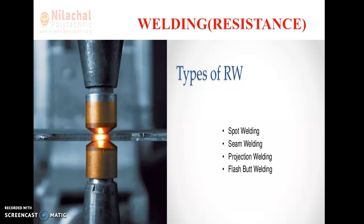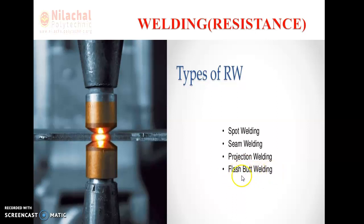Here we come to the different types of resistance welding process. You can see in this slide: there is spot welding, seam welding, projection welding, and flash welding. Another welding type is butt welding — flash and butt are two different types of welding process. You can write flash welding and butt welding separately.